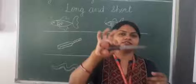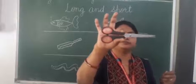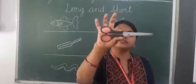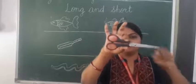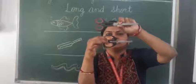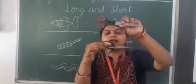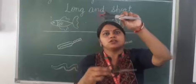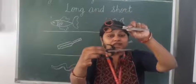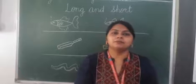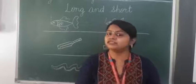Now I will show you some objects. Can you see this? Tell me, this scissors is long or short? I know some of the students will say, ma'am, this is long, and some of them will say, ma'am, this is short. Now I will show you another scissors. Now we can do the comparison and we can say this is a long scissors and this is a short scissors. It means, when we do the comparison, that time we can say this is long and this is short. Without comparison, we can't say which one is long and which one is short.